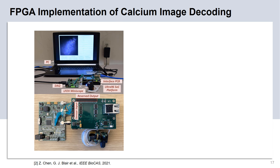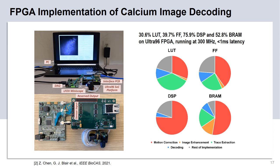This photo shows the hardware and user interface setup for the real-time calcium image processing and decoding implementation. Our CNN-based calcium image decoding implementation consumes 30% LUT, 40% flip-flop, 75% DSP, and 50% BRAM on the Ultra96 FPGA device. The figure on the right shows the breakdown of hardware usage among accelerators in our implementation. The FPGA implementation runs at 300 MHz, and under this frequency the latency for the calcium image decoding is less than 1 ms.